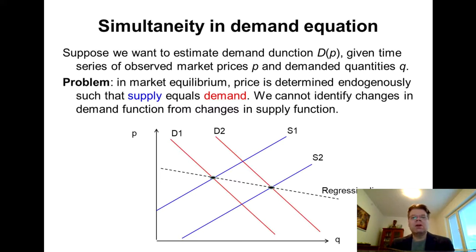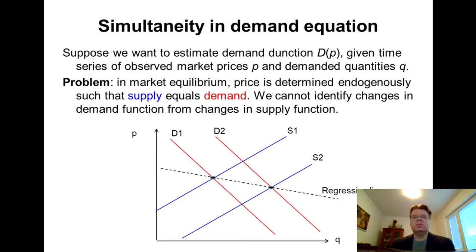If you have taken an introductory course in economics, you probably know that we think of demand in the market as a downward sloping curve — here shown as the red lines in the diagram. Supply is then characterized by an upward sloping curve, those blue curves. In this diagram we have price on the vertical axis and quantity Q on the horizontal axis. The market equilibrium occurs where the demand curve and supply curve cross, indicated by the black dots.